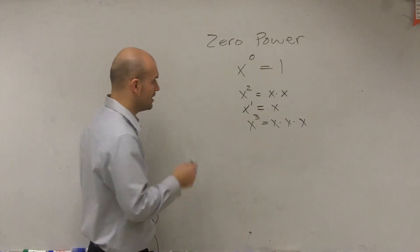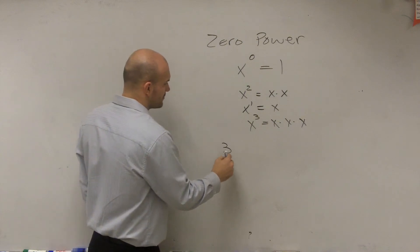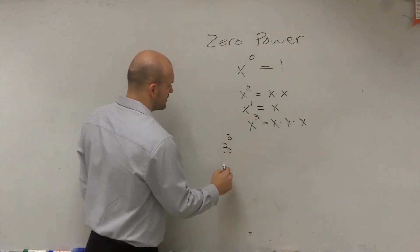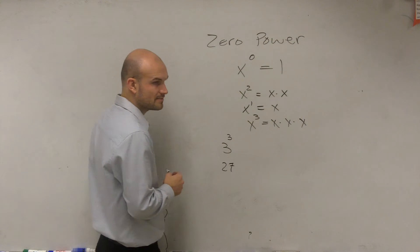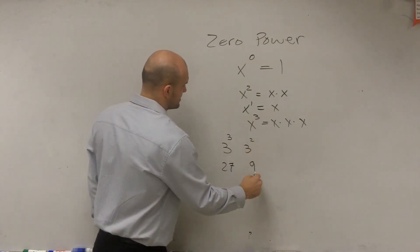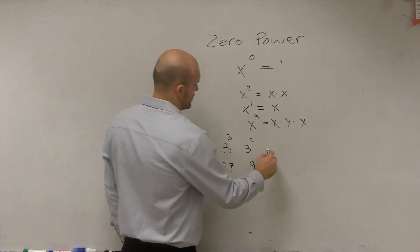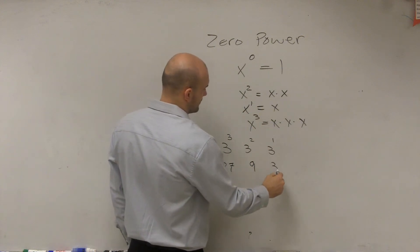Okay, if you were to write in 3, 3 cubed is 27, right? 3 squared is 9. 3 to the first power is 3.